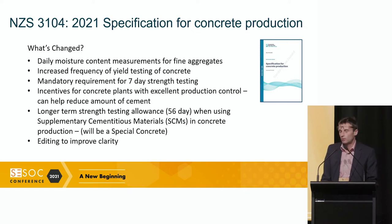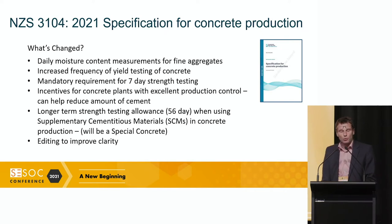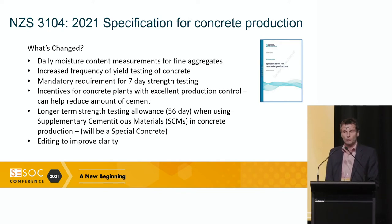Now looking at the key changes — summarised in about five or six key bullet points. First, daily moisture content measurements for fine aggregates, which helps with the dosing of water, as it can be influenced by how wet the aggregates are in storage. Second, increased frequency of yield testing of concrete, which helps give a picture of density in terms of under or over cement proportions — it can calibrate that you are getting the right amount of cement in the concrete.